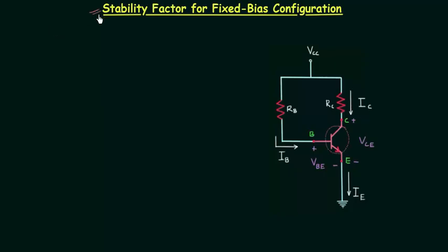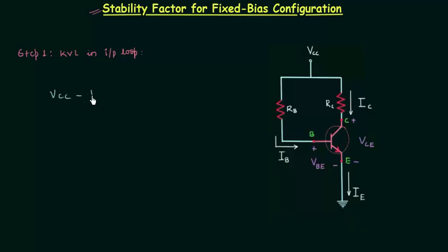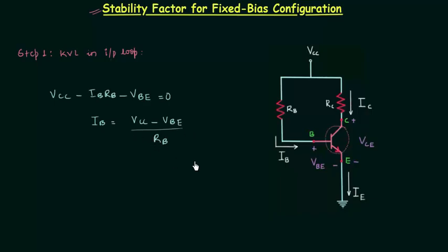First we will find out stability factors for fixed bias configuration. You can see the circuit of fixed bias configuration. Step number one is the application of Kirchhoff's voltage law in the input loop. We apply KVL in the input loop to obtain the base current IB. We have VCC minus IB·RB, the drop across this resistance, minus VBE equal to zero.